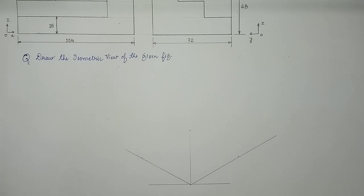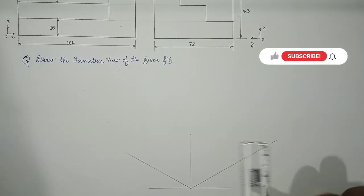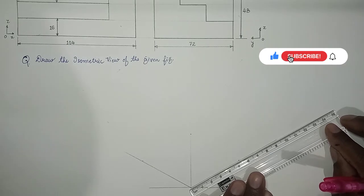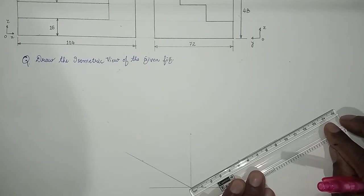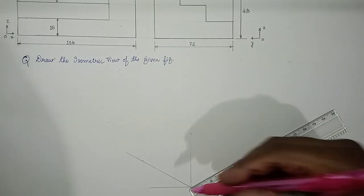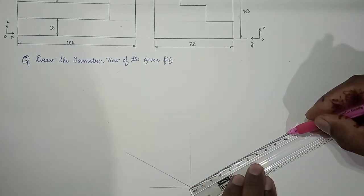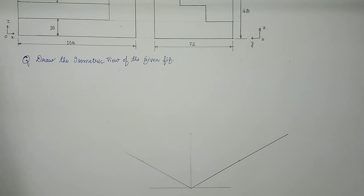So we mark 104 along x direction. So we draw a line, mark 104, mark a point.